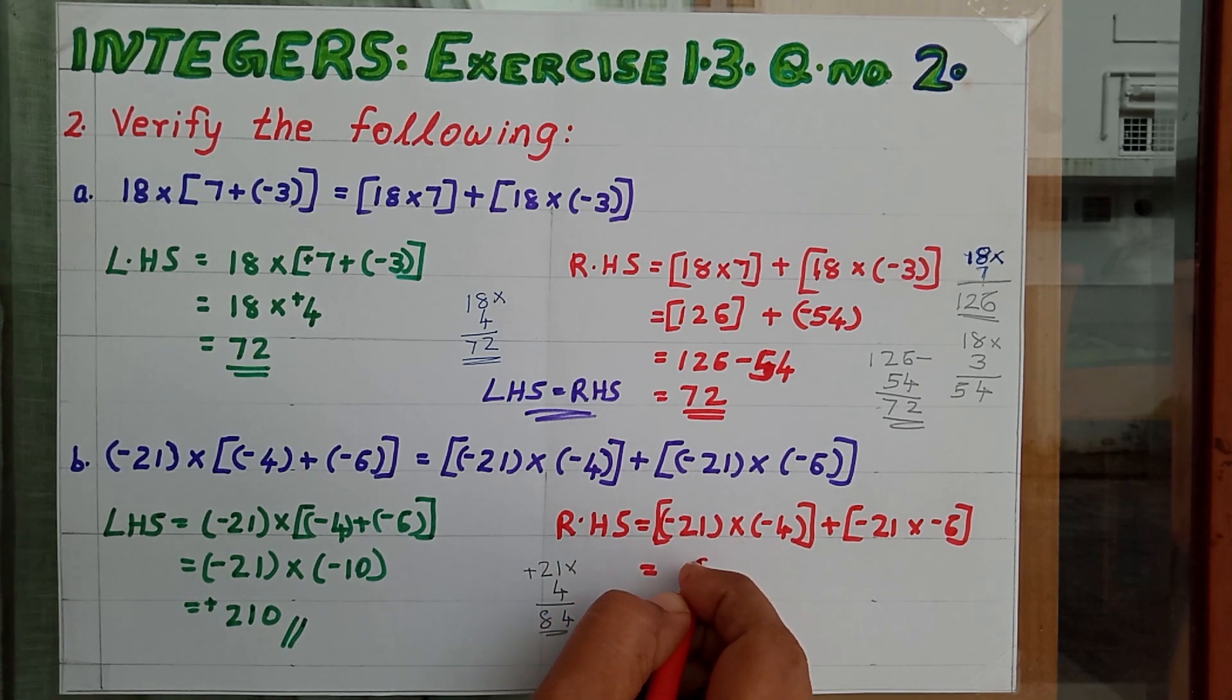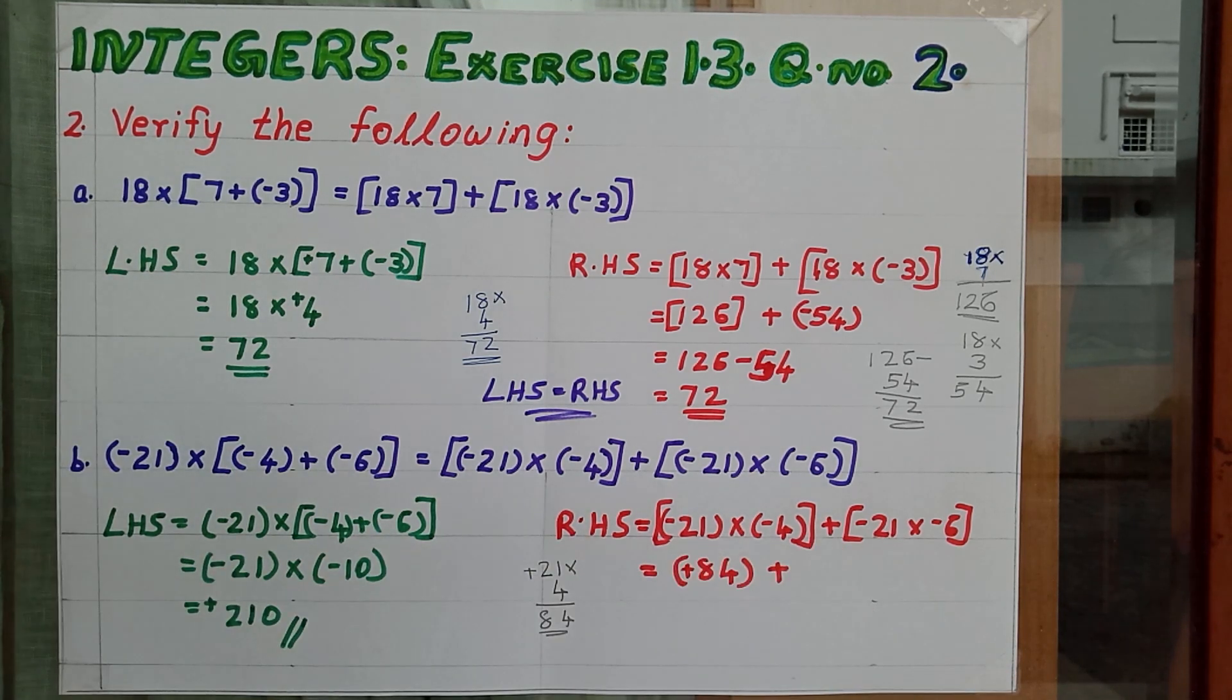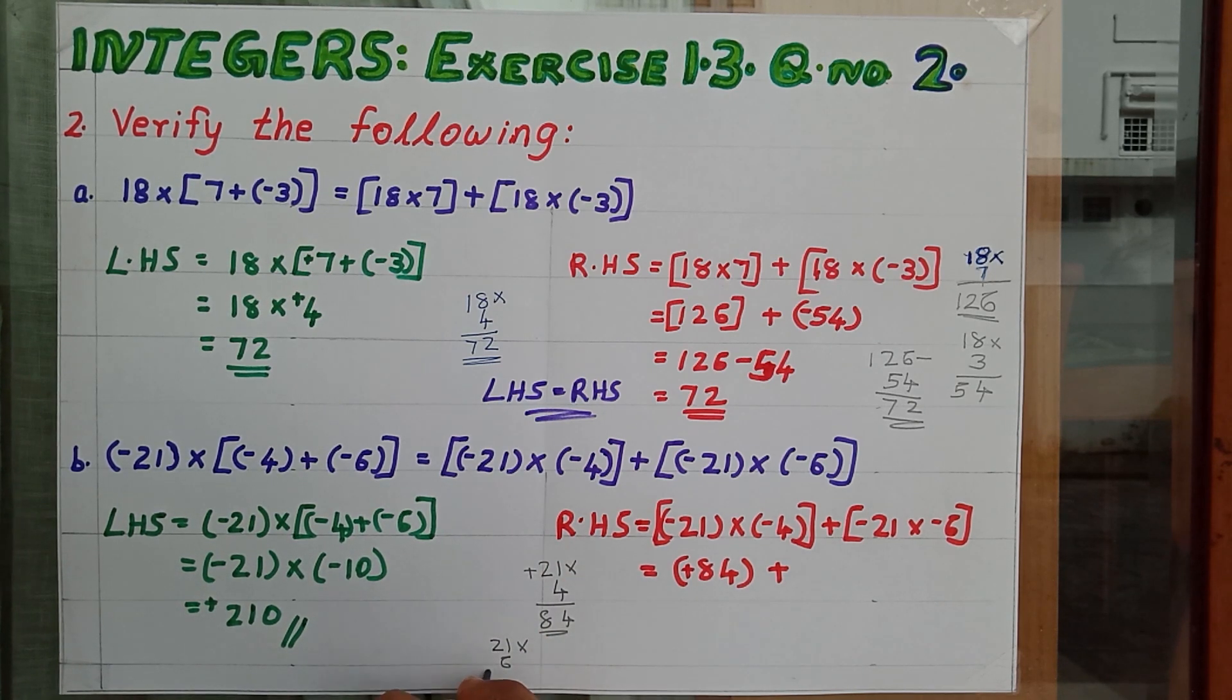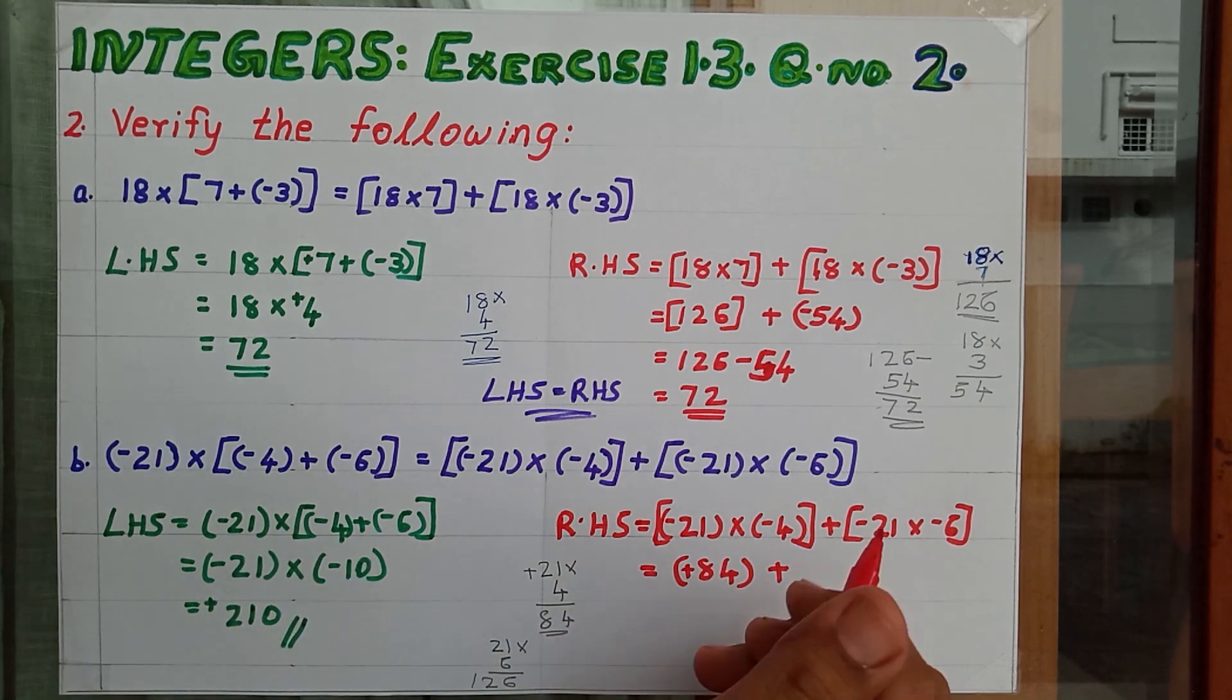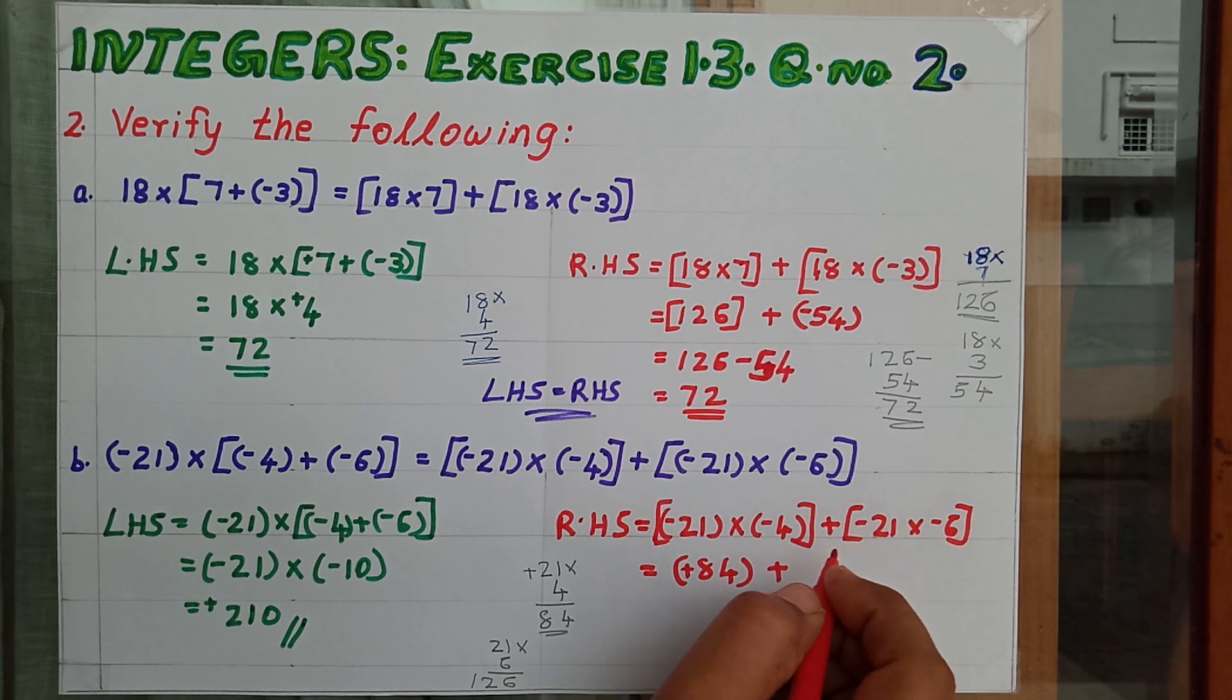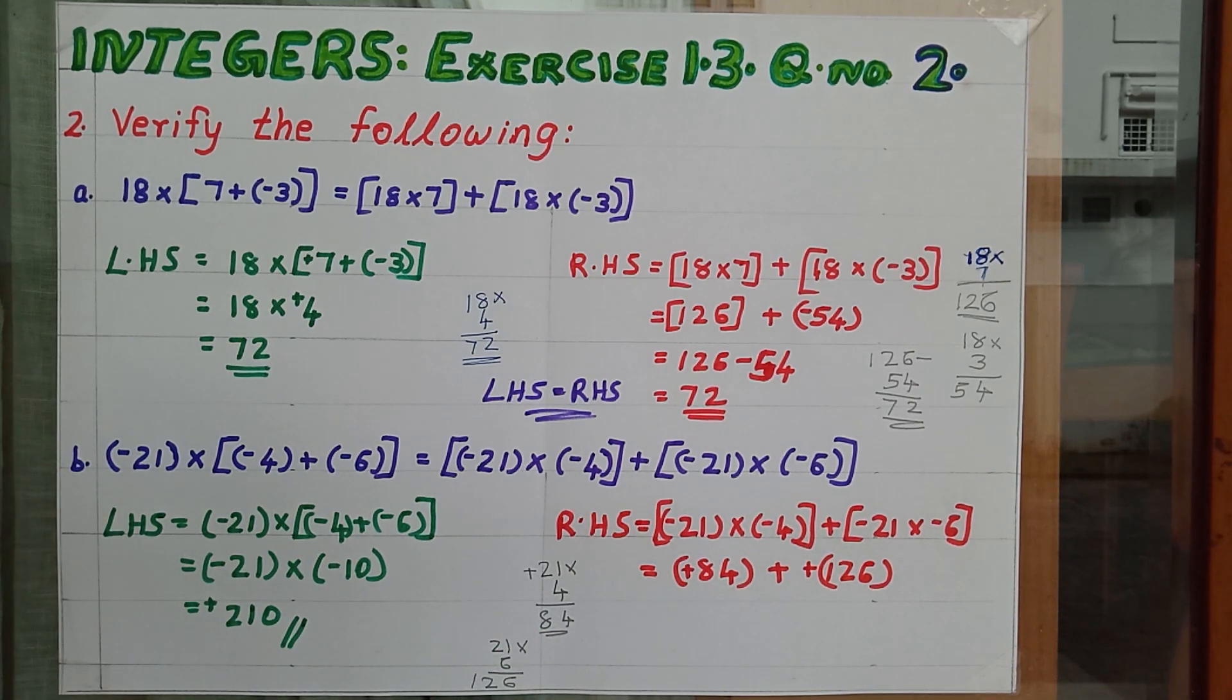So positive 84 plus then 21 into 6. 126. Minus into minus plus. So plus 126.